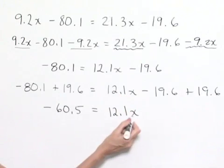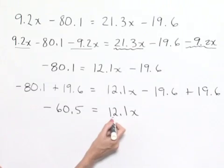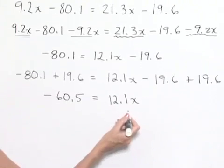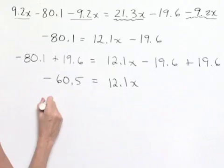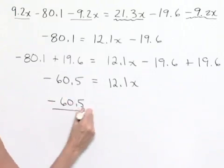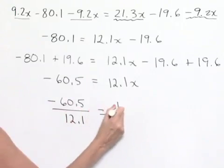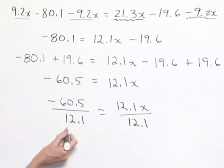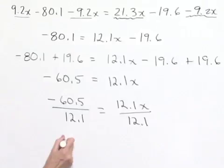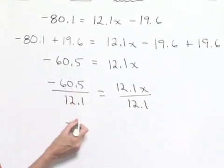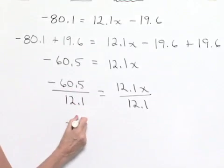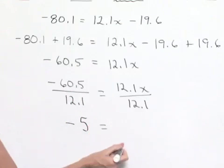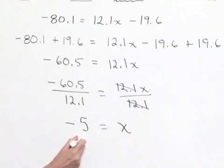Now, in order to solve for x, we see that we are multiplying by 12.1. We can undo the multiplication by using division. So we have negative 60.5 divided by 12.1 equals 12.1x divided by 12.1. On the left hand side, a negative number divided by a positive number gives a negative result: 60.5 divided by 12.1 equals 5. On the right hand side, we divide out the coefficient to leave us with x. So the solution set for this equation is the set including the value negative 5.